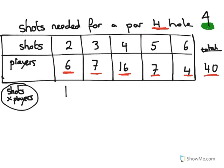So we take 2 times 6 here, giving us 12. 7 times 3, 21. 16 times 4, double 16, we get 32. Double that again, we get 64. 7 fives, 35. And 6 fours, 24.